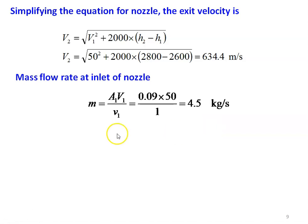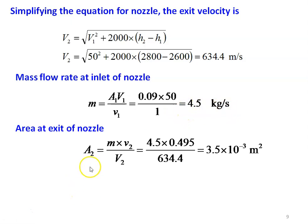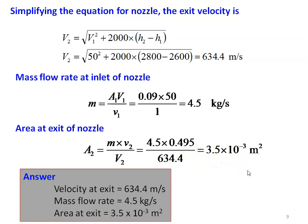Mass flow rate from the continuity equation: M = A₁V₁/v₁ = 0.09 × 50 / 1 = 4.5 kg/s. Exit area of the nozzle: A₂ = M·v₂/V₂ = 4.5 × 0.495 / 634.4 = 3.5×10⁻³ m². Answers: exit velocity = 634.4 m/s, mass flow rate = 4.5 kg/s, exit area = 3.5×10⁻³ m².